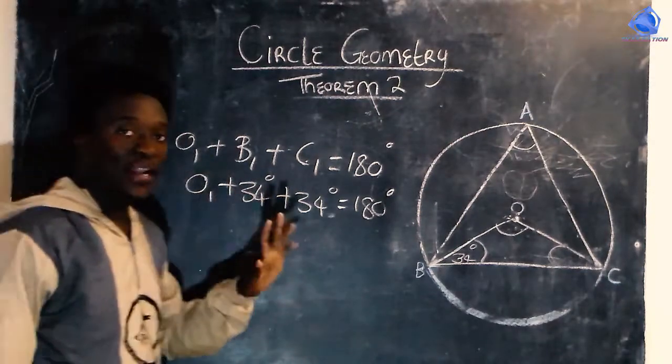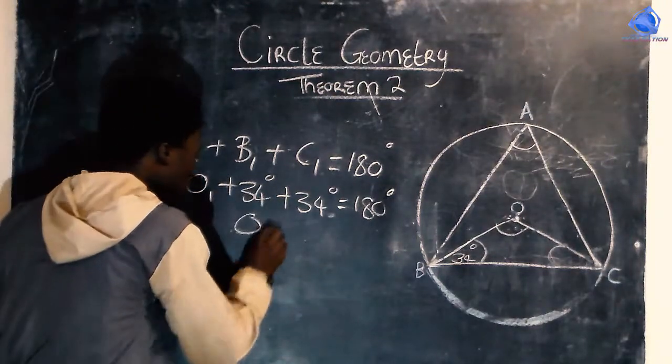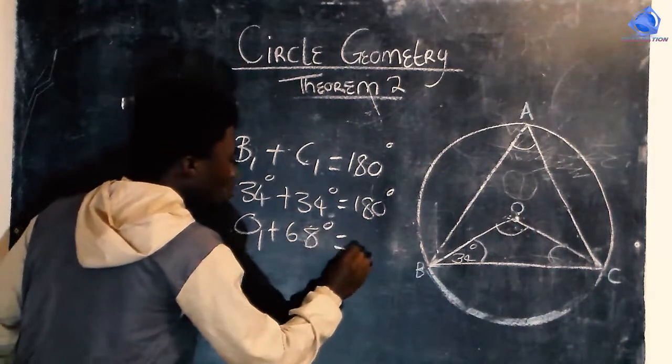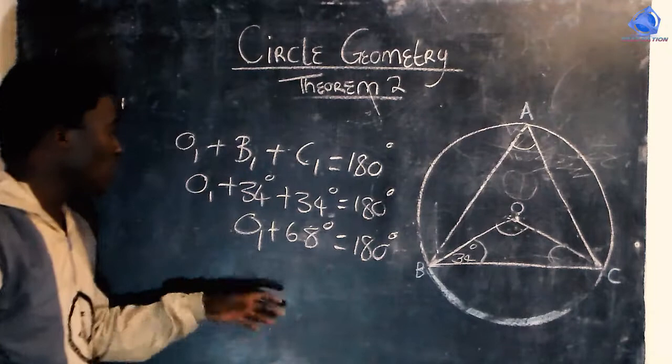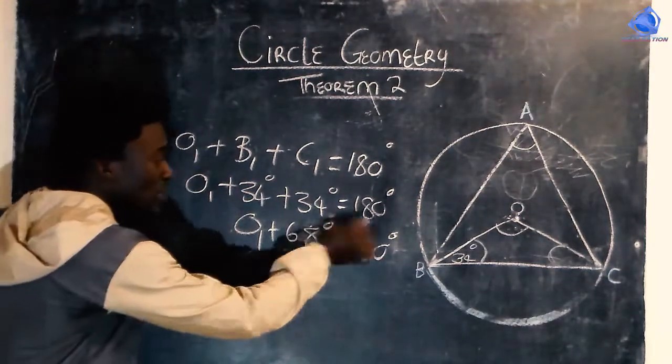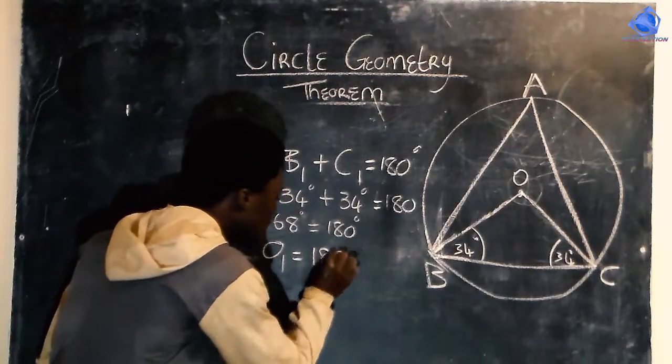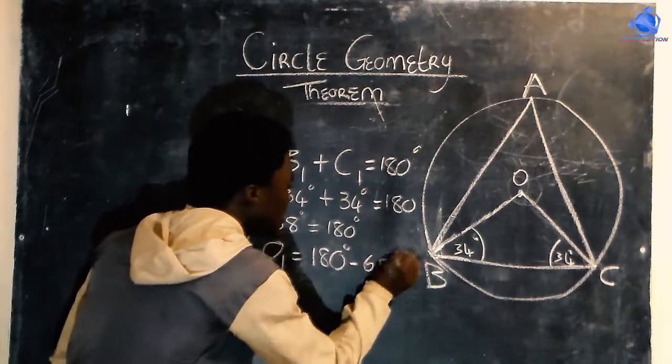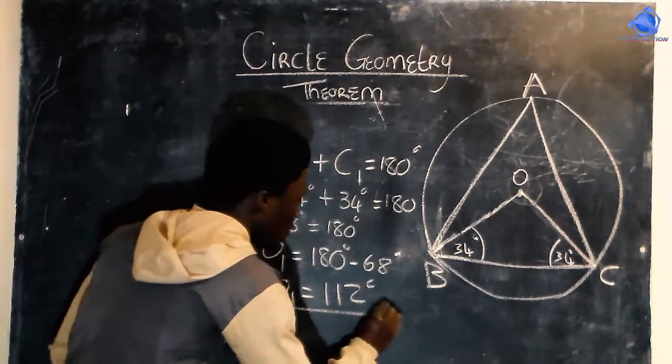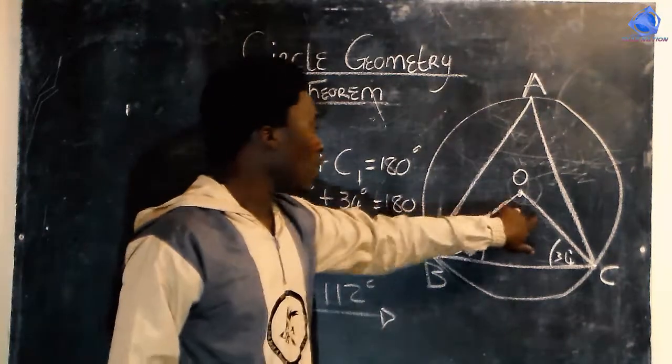61, 64, 68, 68 degrees. So O1 equals to 112 degrees. O1 equals to 112 degrees.